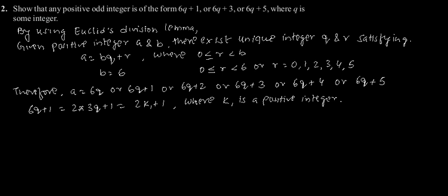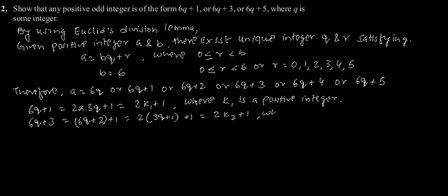Now considering 6q plus 3: this can be written as 6q plus 2 plus 1, which equals 2 into (3q plus 1) plus 1. Letting 3q plus 1 equal k2, we get 2k2 plus 1, where k2 is an integer. This is also of the form 2k plus 1, which is odd.